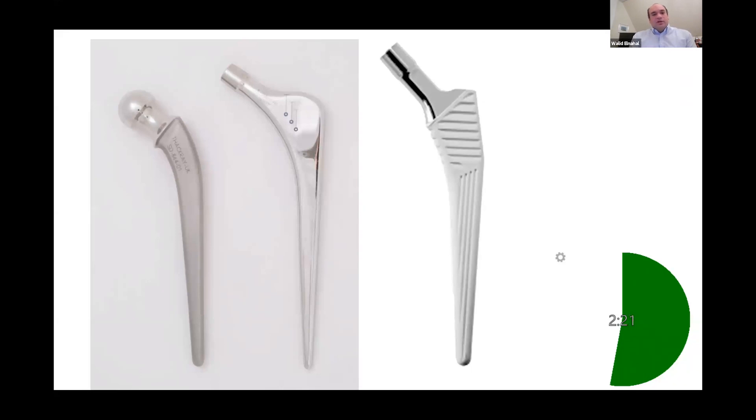As for the Charnley stem, it has a collar, has a rough surface, and it functions as a composite beam design. So the stem acts as a rod which binds to the cement, which then binds to the bone.